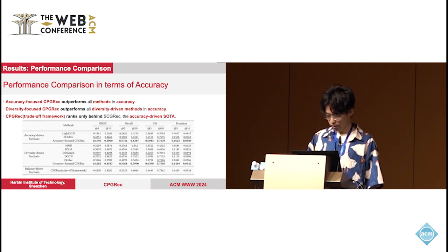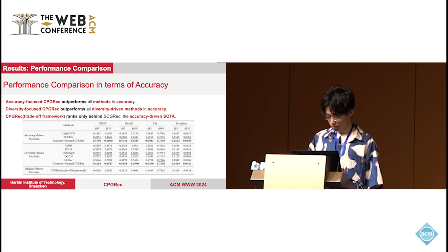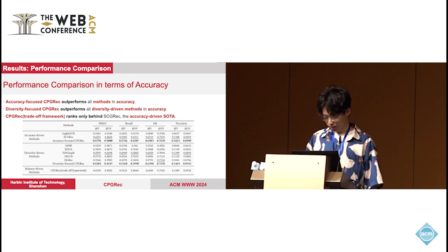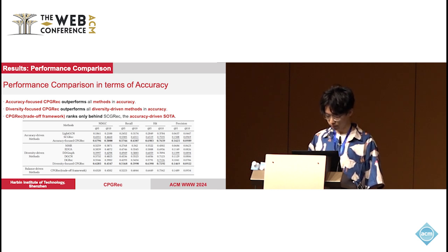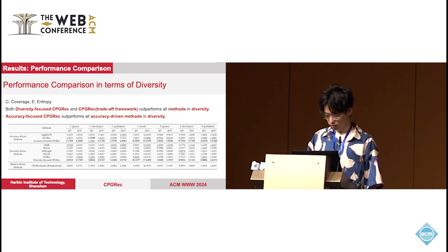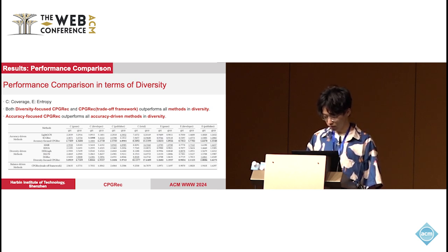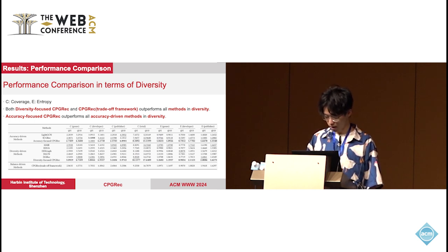In the results section, we compared our model CPGRAC with both accuracy-driven and diversity-driven methods in terms of both accuracy and diversity. First, in terms of accuracy, the accuracy-focused CPGRAC outperforms all baselines, while the diversity-focused CPGRAC outperforms all diversity-driven methods. The trade-off CPGRAC ranks only behind the accuracy-driven solver named SCGRAC. Second, in terms of diversity, we introduced the metrics coverage and entropy. The experimental results show that both accuracy-focused CPGRAC and trade-off CPGRAC outperform all baselines in diversity, while the accuracy-driven CPGRAC also outperforms all accuracy-driven baselines.